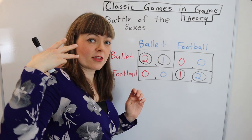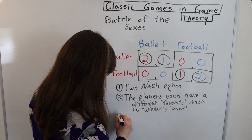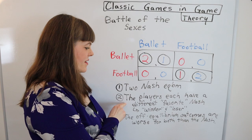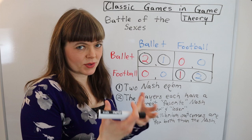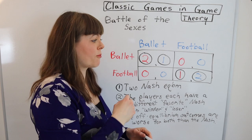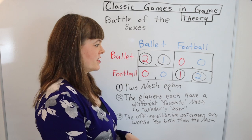Those are going to be the three traits of a battle of the sexes scenario, so let me write those down. Looking at the second trait — the fact that each player has a different favorite Nash equilibrium — that means there's actually a winner and a loser. What makes this really interesting is that this is a cooperative game. The two players are trying to cooperate to avoid the off-equilibrium outcomes where each person goes off doing their own thing. But at the same time, while there's cooperation, there's also competition, because there's a winner and a loser between the cooperative outcomes.